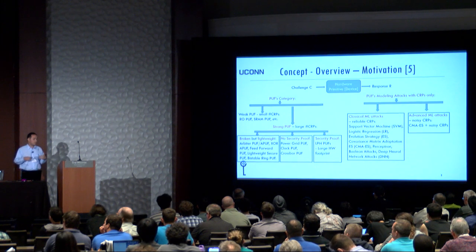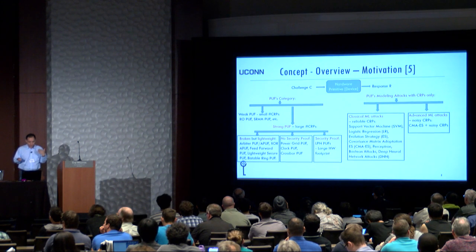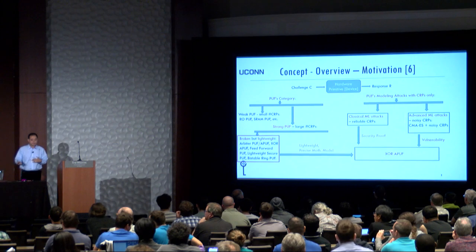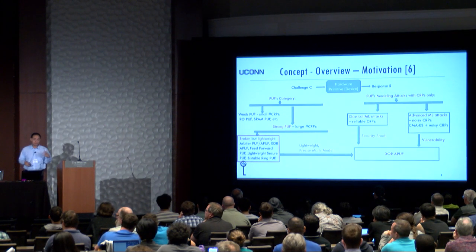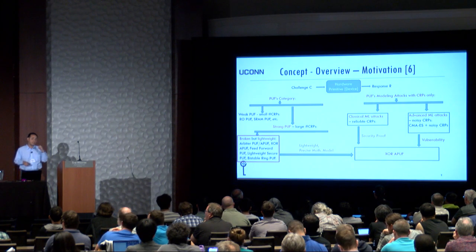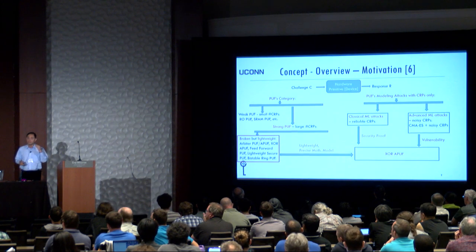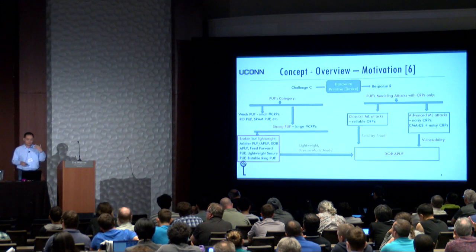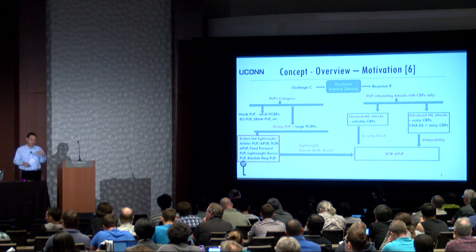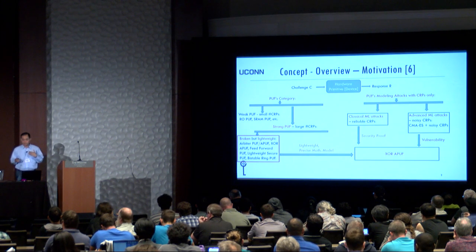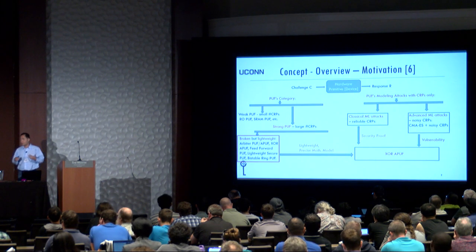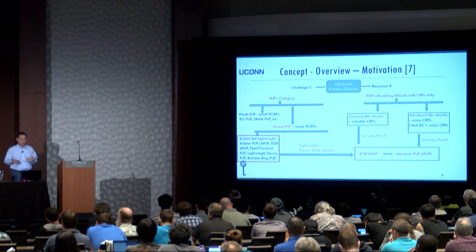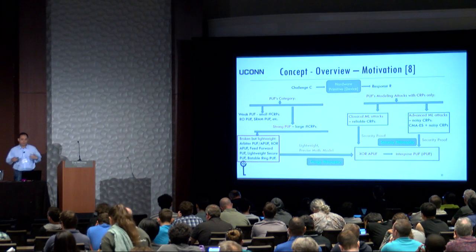Based on existing attack results, we further classify strong PUFs into three categories: broken but lightweight PUFs (for example, Arbiter PUF and XOR Arbiter PUF); PUFs with no security proof, where security is unclear; and PUFs with rigorous security proof, but very large in hardware. Our design philosophy is to take XOR Arbiter PUF as a starting point because it is lightweight, its security does not rely on digital computation, it has a precise mathematical model, and it is secure against all classical machine learning attacks. However, it is not secure against reliability-based machine learning attacks, which is why we build on top of it to introduce Interpose PUF.